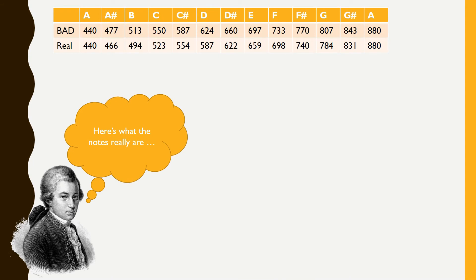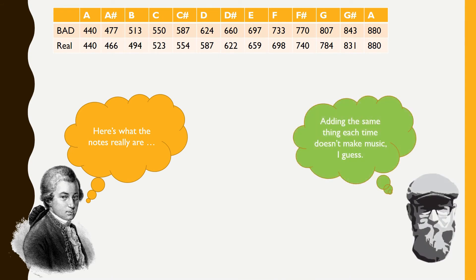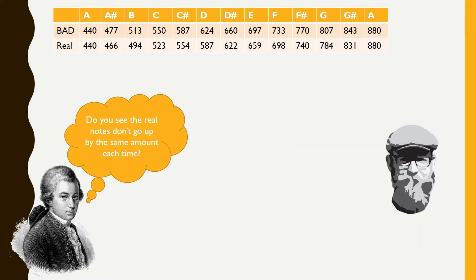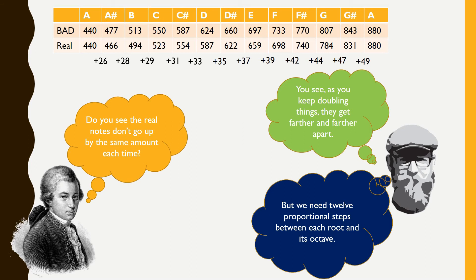Looking at real notes versus fake notes, we can't just add something every single time because it doesn't work. Each time the notes go up by an increasing amount, because octaves double. When you keep doubling things, the distances between get bigger and bigger — like 2 to 4 is a difference of 2, double 4 you get 8, the distance doubled to 2. Then 16, 32, 64, 128, 256, 512, 1024 — the distances get bigger and bigger. That's why we can't just add something.